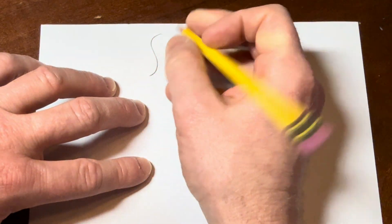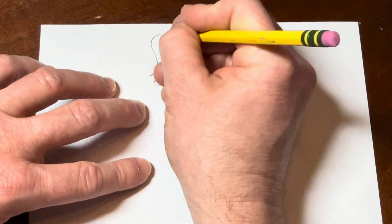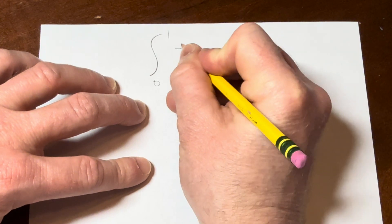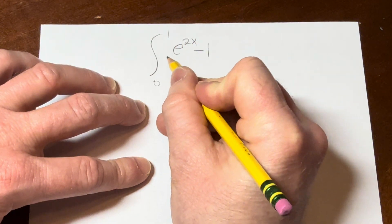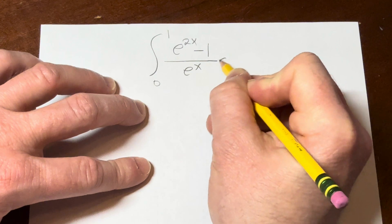Hi everyone, in this video we're going to do a definite integral involving an exponential function. This should be kind of fun. So we're going to integrate from 0 to 1 and we have e to the 2x minus 1 over e to the x dx.